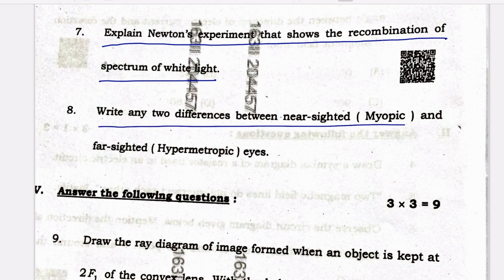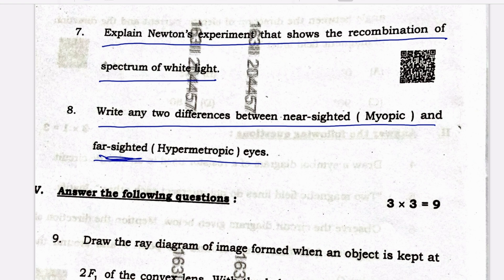Write any two differences between nearsighted (myopic) and farsighted (hypermetropic) eyes. A person with myopia can see nearby objects clearly but cannot see distant objects distinctly; it is caused by excessive curvature of the eye lens and corrected by a concave lens of suitable power. A person with hypermetropia can see distant objects clearly but cannot see nearby objects distinctly; the focal length of the eye lens is too long and is corrected by a convex lens of appropriate power.